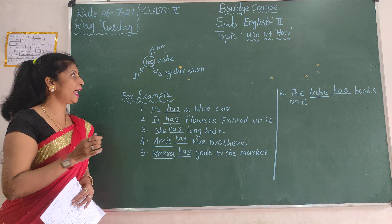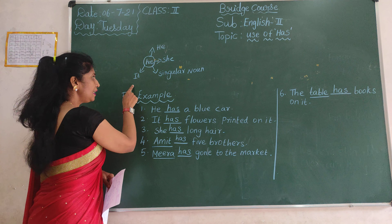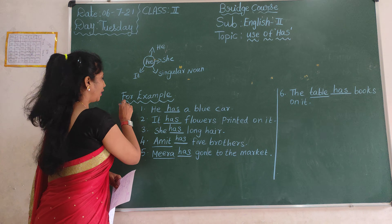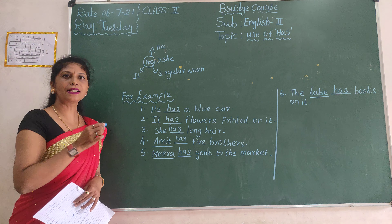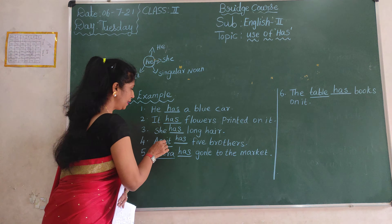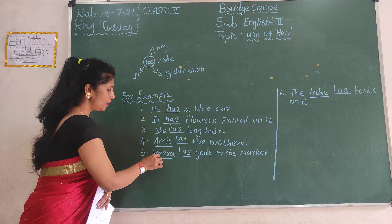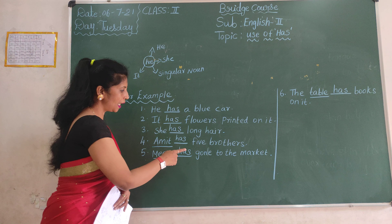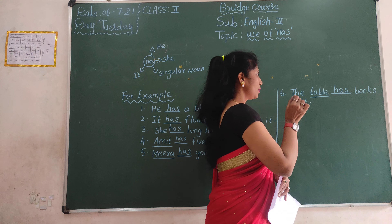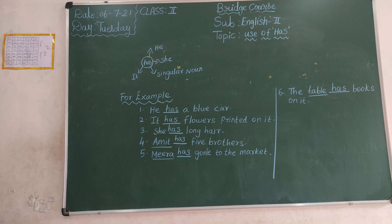So, use of 'has': we use 'has' for he, she, it, and singular noun — one noun. For example: he has a book, it has flowers printed on it, she has long hair, Amit has five brothers — Amit is one person. Meera has gone to the market — one person. The table has books on it — one thing, singular noun.